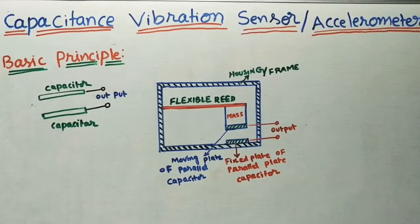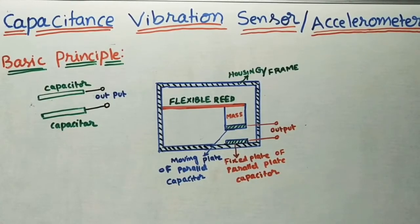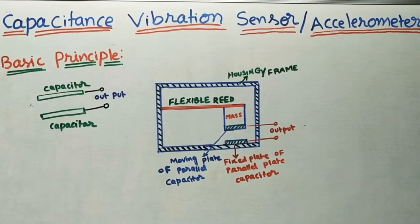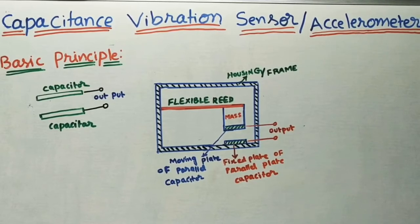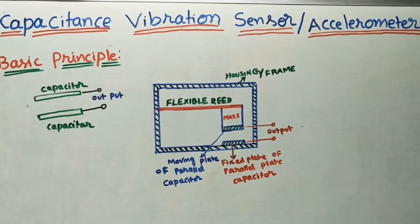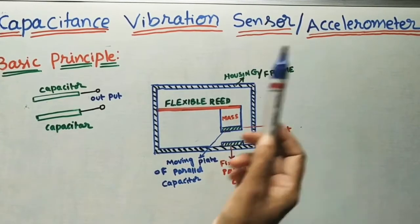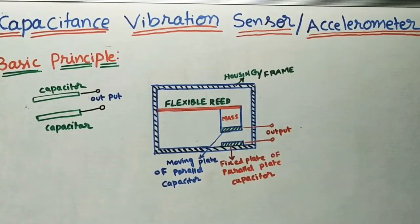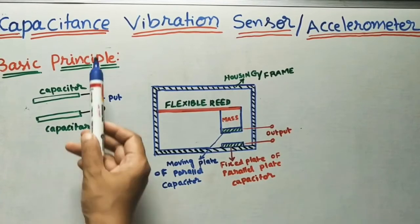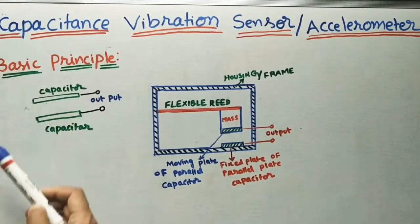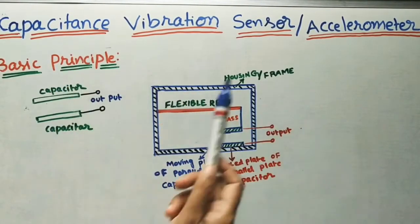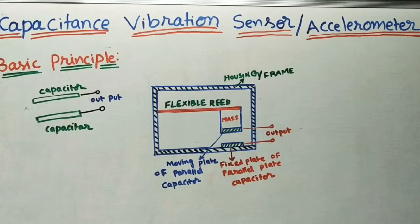Let us discuss the Capacitance Vibration Sensor, also called an Axilometer. This axilometer finds the vibrations of a given engine or machine — it senses vibrations, so we can also call it a sensor. Here we are using capacitance for finding the vibrations, which is why we call it a capacitance vibration sensor or axilometer.